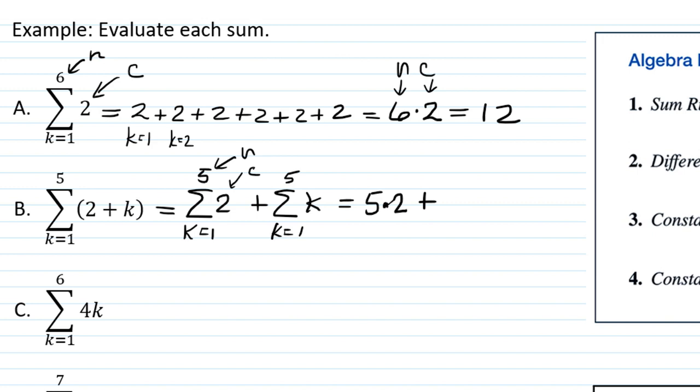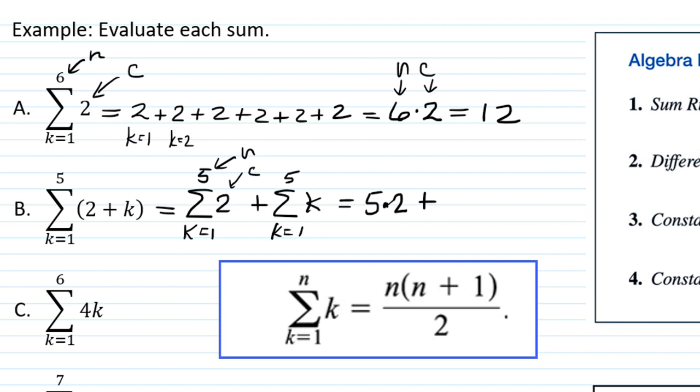Plus, now we need to look for the sum k equals 1 to 5 of k. And of course, since the index only goes up to an upper limit of 5, you could just add them up. But we want to apply these rules so if we have large sums, we don't need to write out all of the terms.